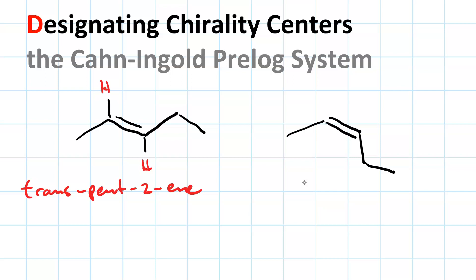The other one, on the right, has both of those hydrogens associated with the double bond going in the same direction, so that is cis-pent-2-ene, rather.